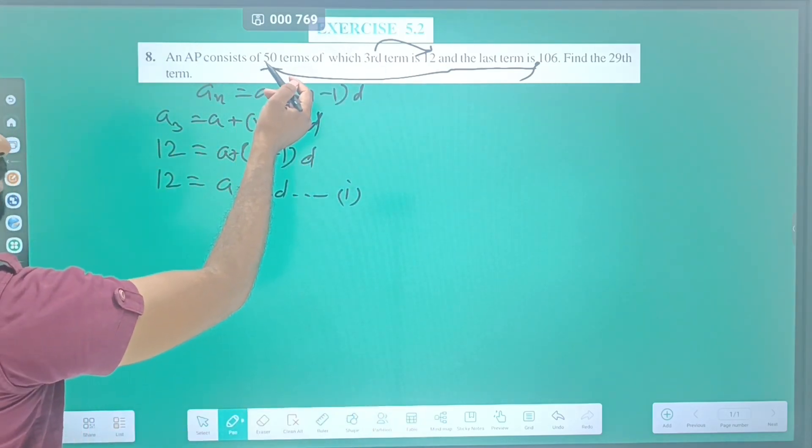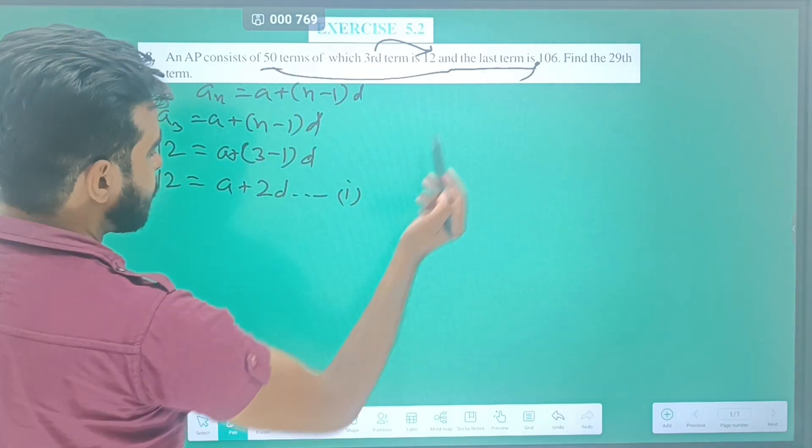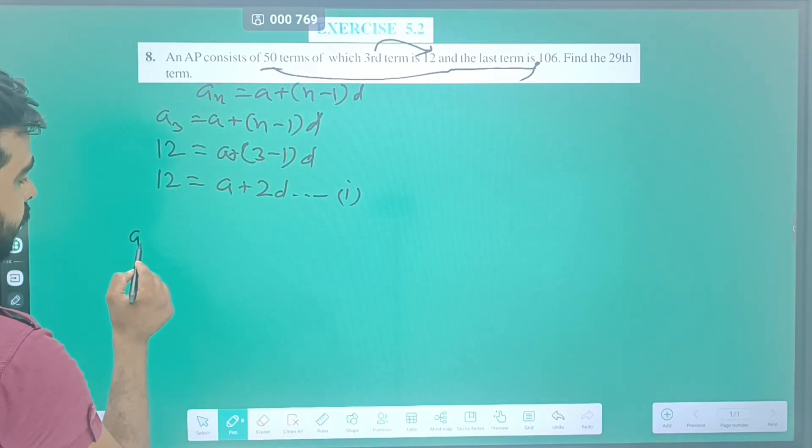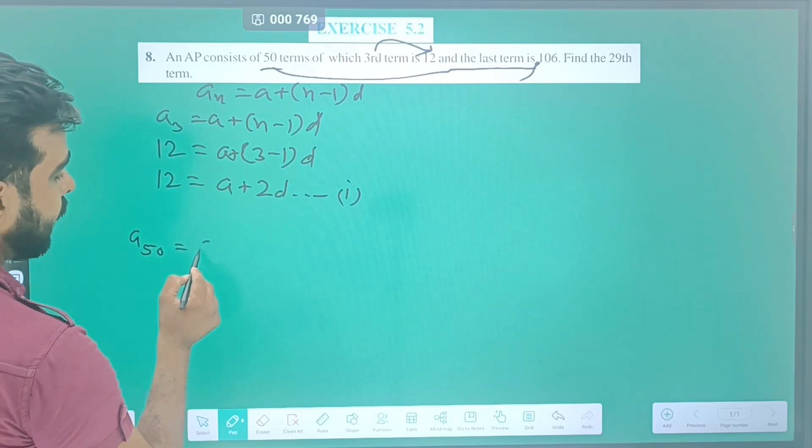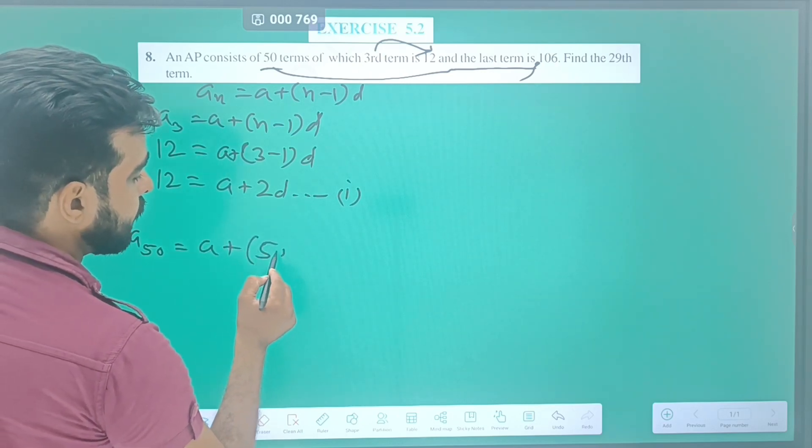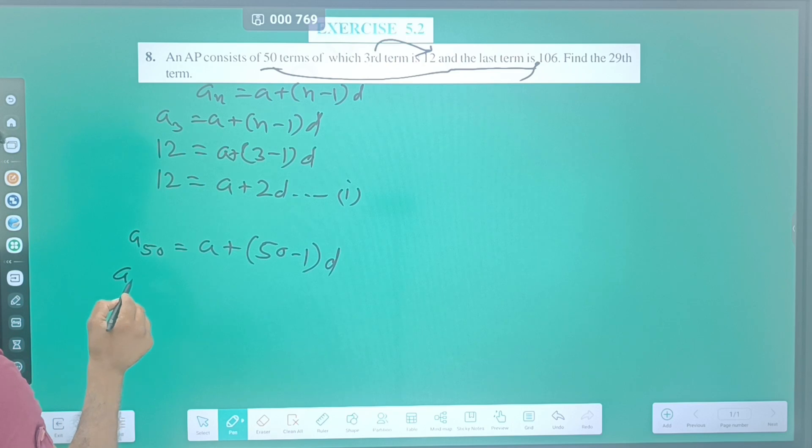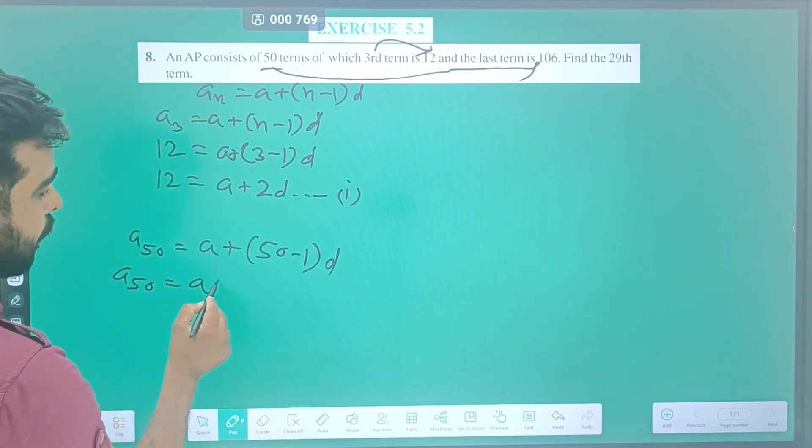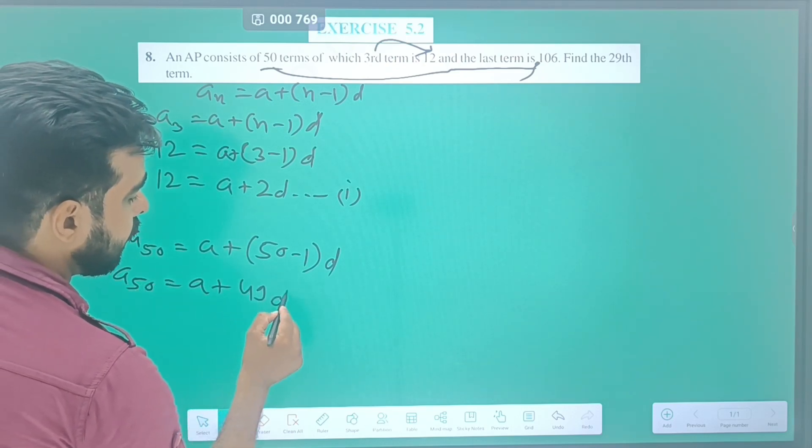Then, the 50th term is 106. So a_50 = a + (50-1)d. a_50 = a + 49d. This is equation number 2.